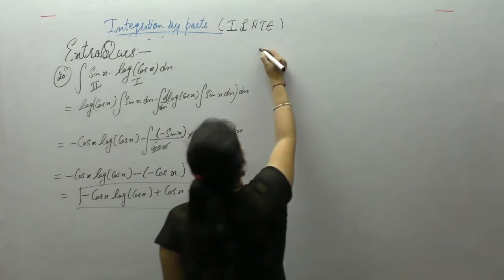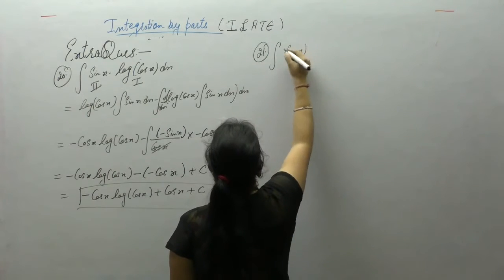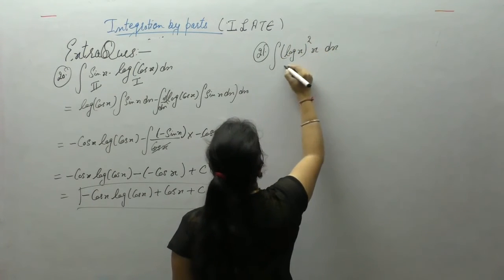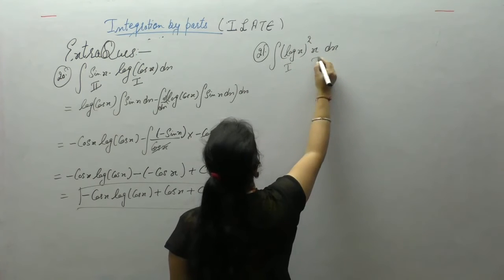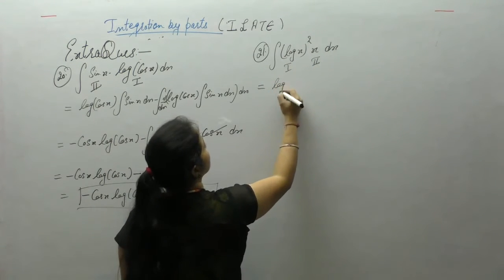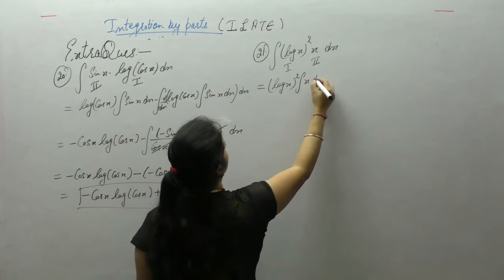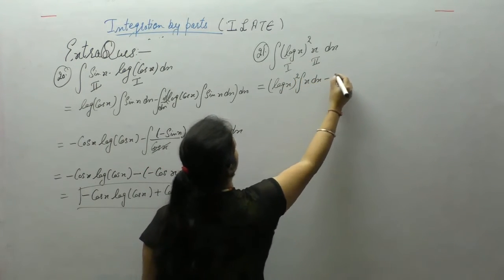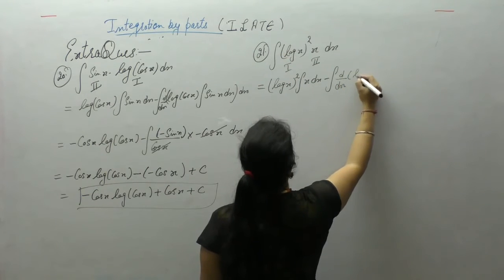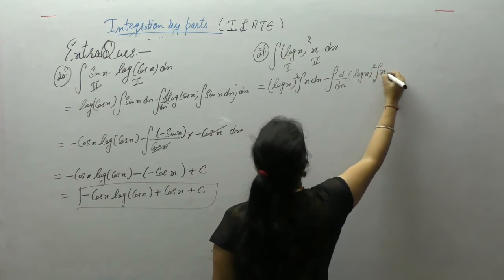Next is integral of [log(x)]² multiplied by x dx. Log is taken as first function and algebraic as second, following the ILATE rule. First function as it is, multiplied by integral of second, minus integral of derivative of first function times integral of second.